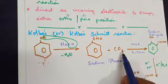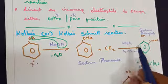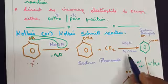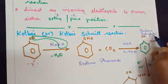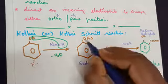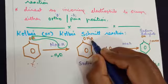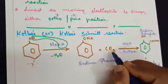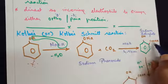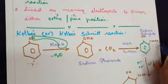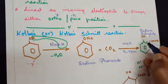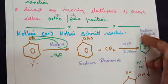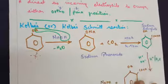Further, when sodium phenoxide is treated with carbon dioxide at a temperature of 400 Kelvin and 427 atmospheres pressure, we get sodium salicylate. The sodium combines with COO and comes out to the ortho position as COONa. The hydrogen goes back to the oxygen, giving us a benzene ring with an OH and COONa group.